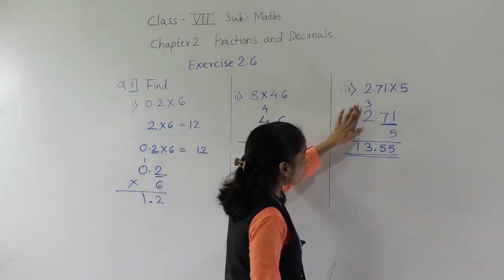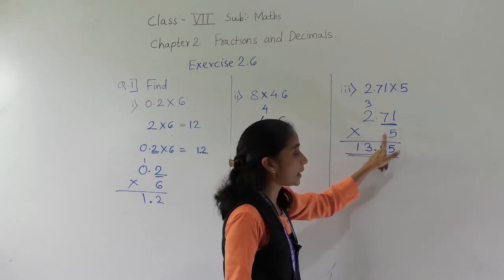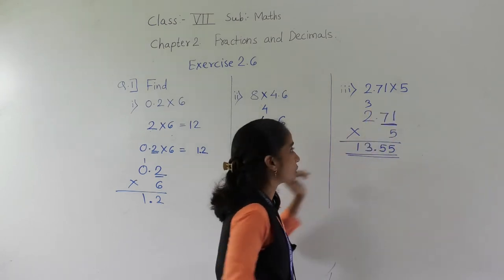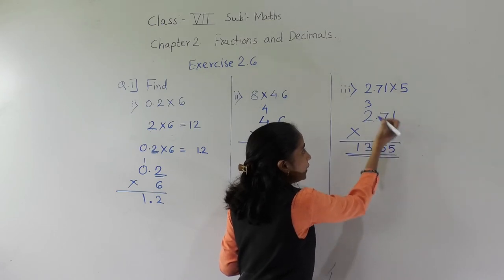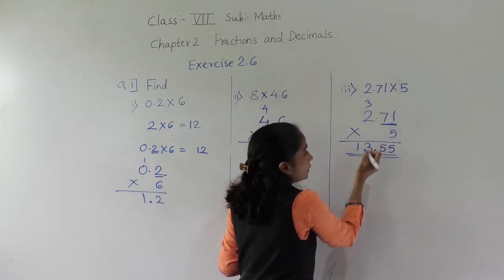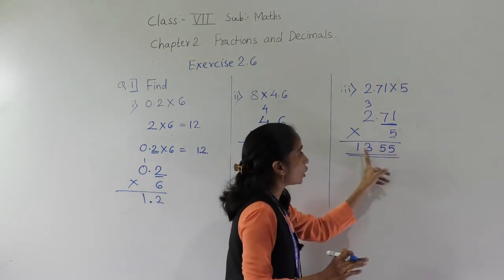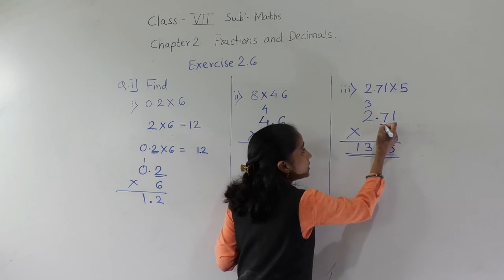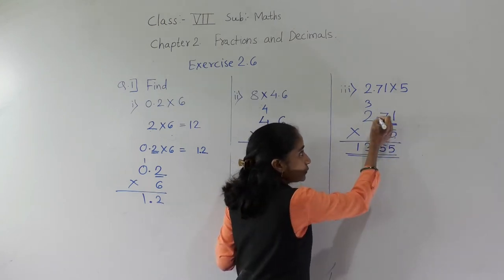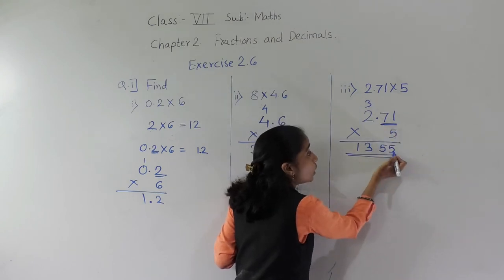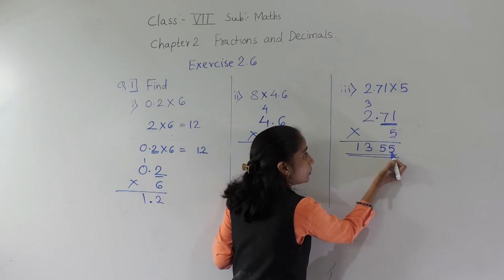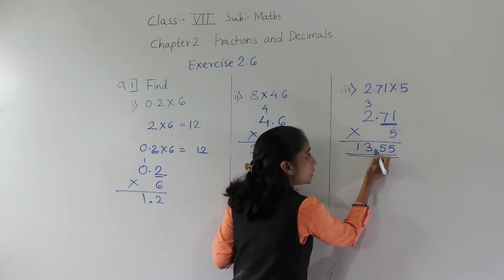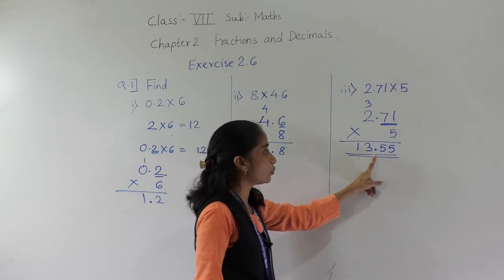Again I will explain. 2.71 multiplied by 5 — don't think first for the decimal point, solve as a simple multiplication: 5 ones are 5, 5 sevens are 35, 5 twos are 10 plus 3 is 13, giving 1355. After that, think for the decimal point. After the decimal point in 2.71 there are 2 digits, so for the answer before 2 digits give the decimal point. Our answer is 13.55.